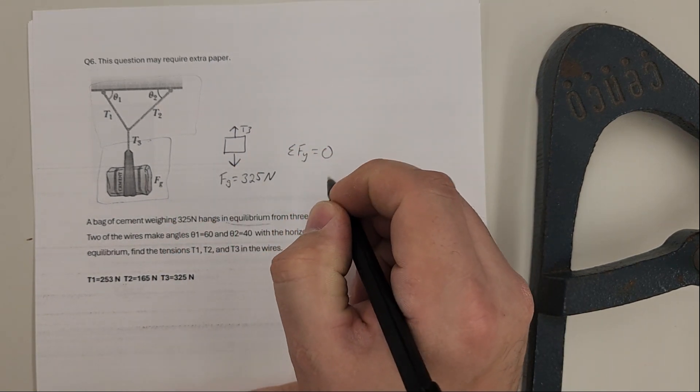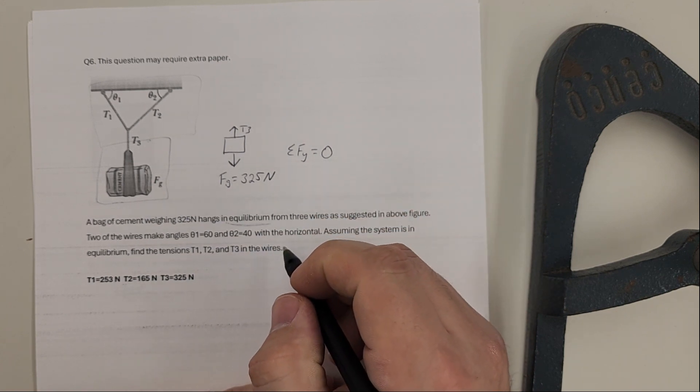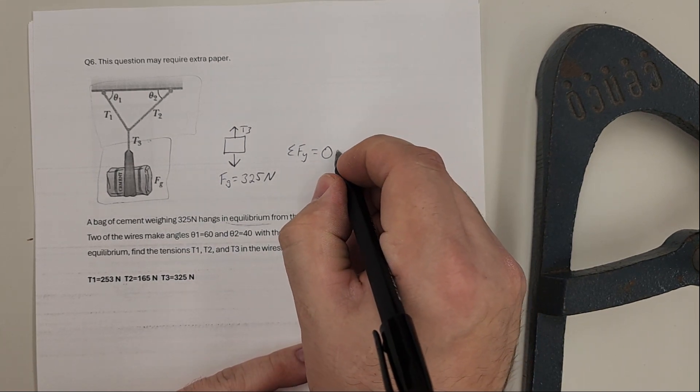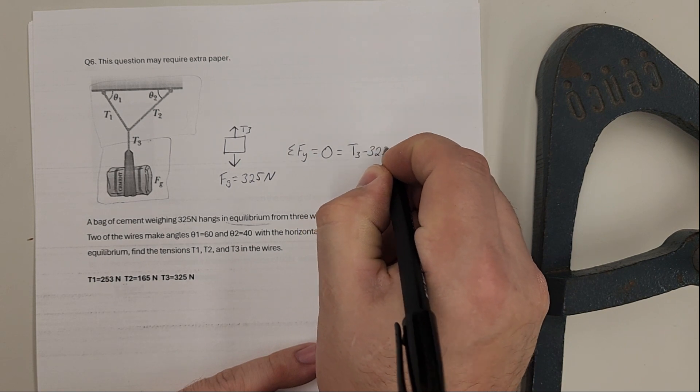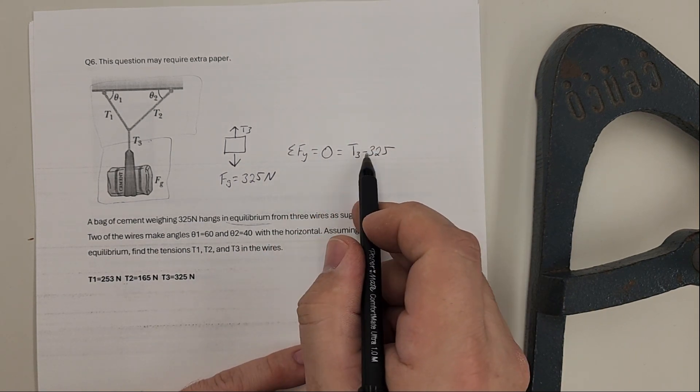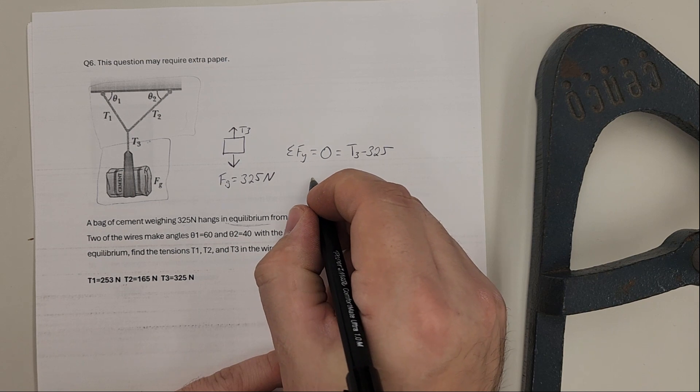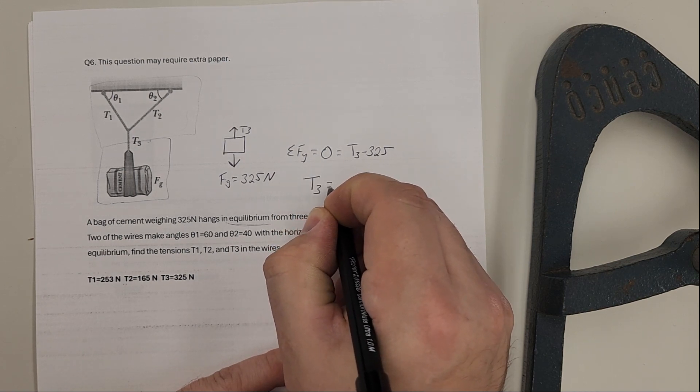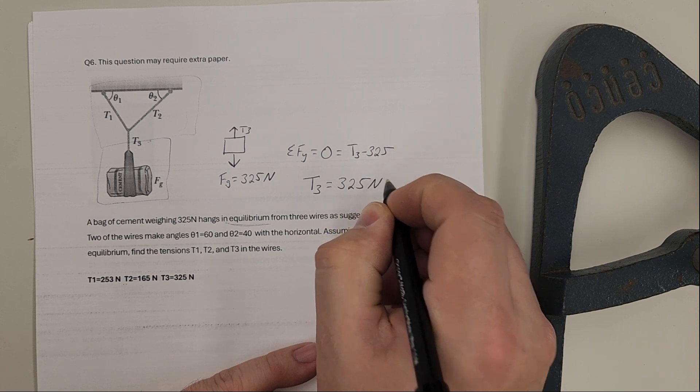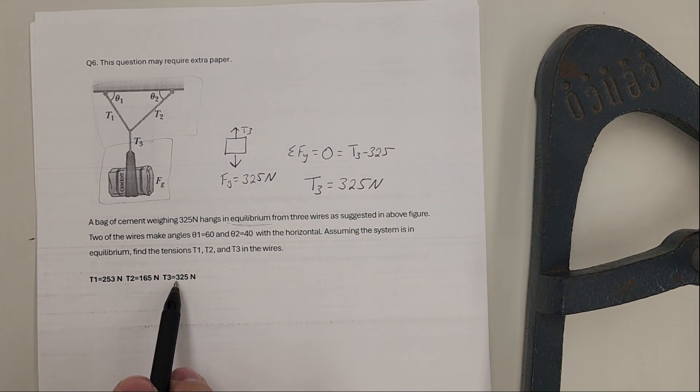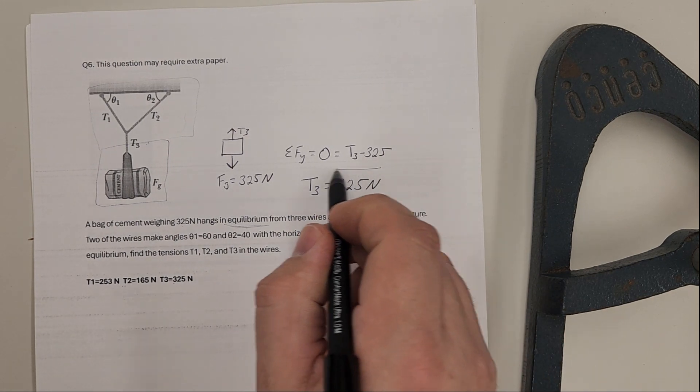If it's in equilibrium, it means the forces have to be zero - sum of everything must be zero, which means we'll have T3 minus 325. If that's equal to zero, we just add the 325 to the other side, and we instantly know that T3 is equal to 325 newtons. That's the easy part, so there's one of our answers.